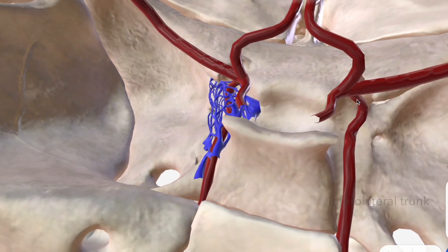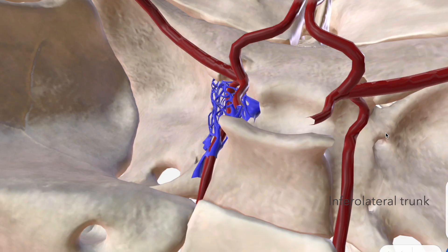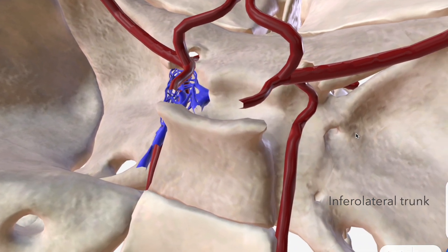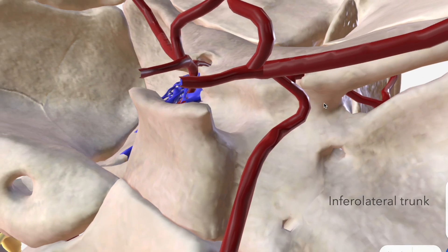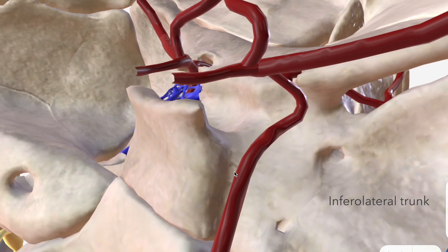Next we have the inferolateral trunk, which also comes from the C4 segment and supplies part of the tentorium cerebelli as well as part of the orbit, on the other side of the superior orbital fissure. That's it for C4, the cavernous segment of the ICA.